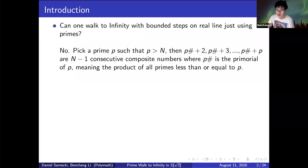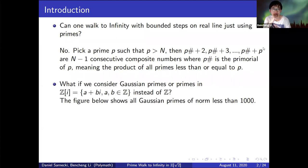This question is pretty simple and the answer is no because we can pick a prime p such that p is greater than N, and with that p primorial, we can construct consecutive composite numbers where N-1 consecutive composite numbers are N+2, p#+3, up to p#+p, meaning the product of all primes less than or equal to p. So here we have an example of that question.